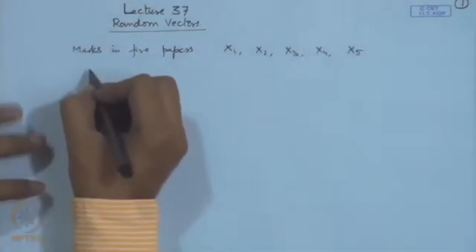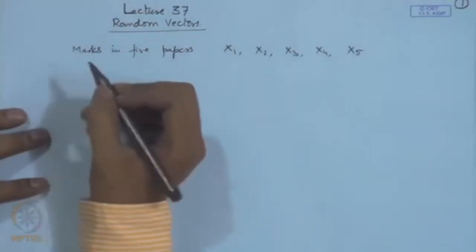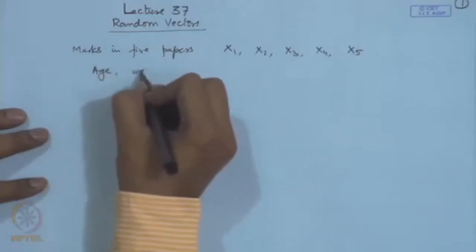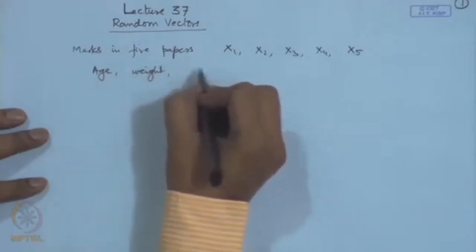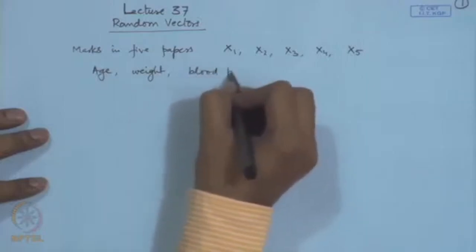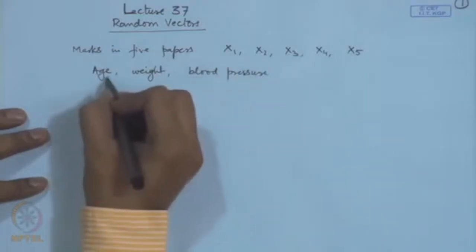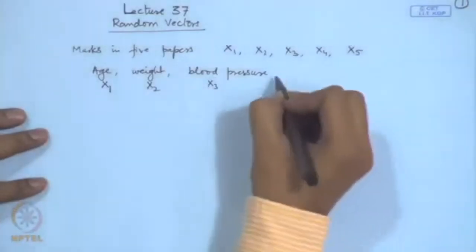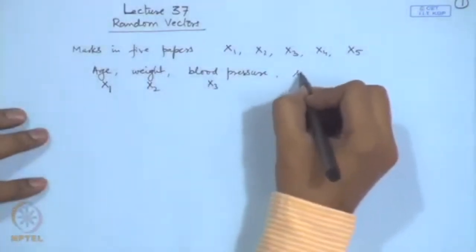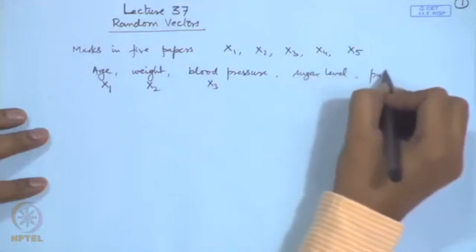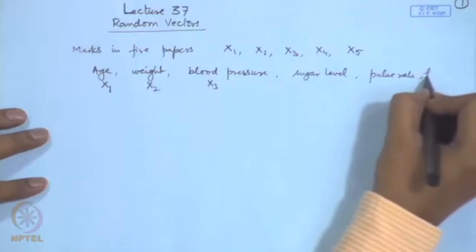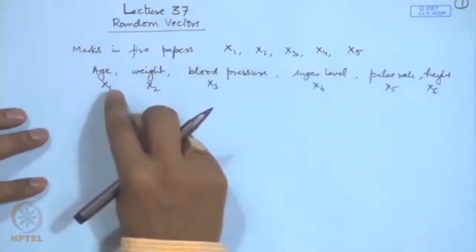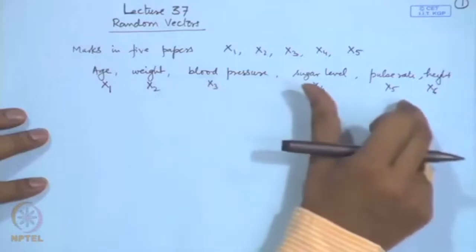If a patient goes to a doctor, the doctor may ask his age, take his weight, and record his blood pressure. So we may write x1 as the age, x2 as the weight, x3 as the blood pressure, or we may also look at his sugar level, pulse rate, and height. In that case, from the single random experiment we are extracting a 6-dimensional vector.